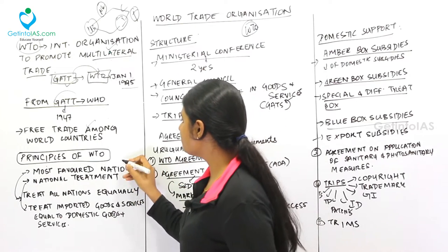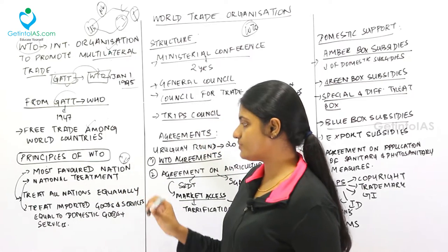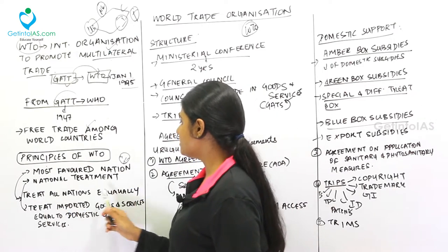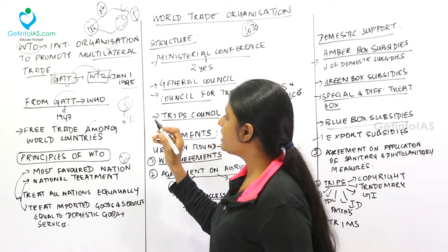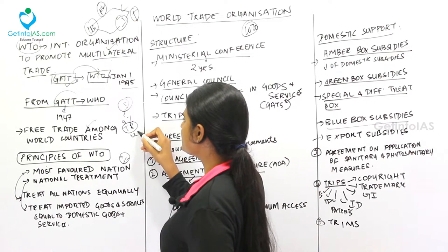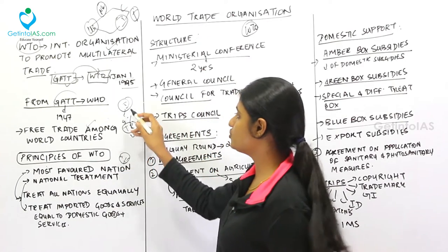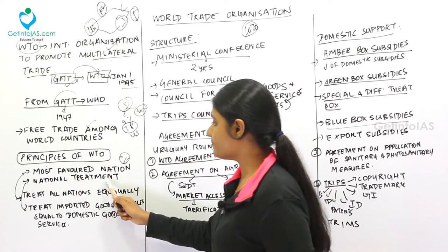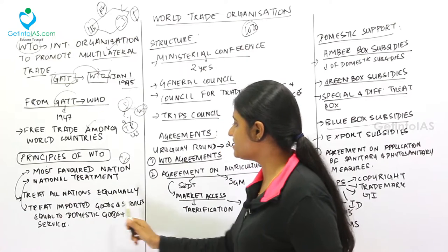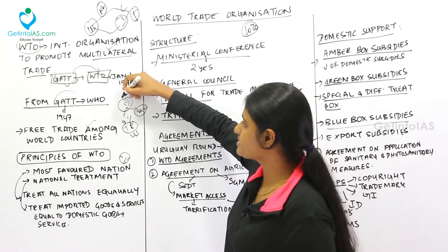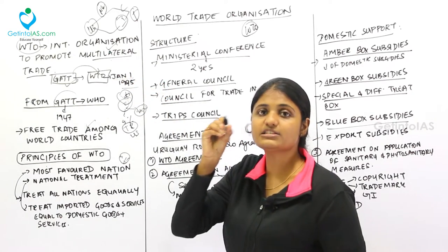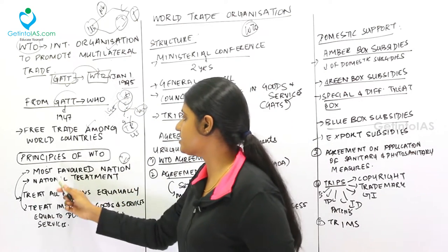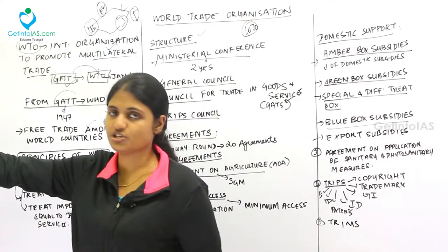The two main principles of WTO are the Most Favored Nation (MFN) principle and the National Treatment principle. MFN means treating all nations equally — for example, if India gives a 5% tariff reduction to the US, it must give the same reduction to Australia. National Treatment means treating imported goods and services equal to domestic goods and services.